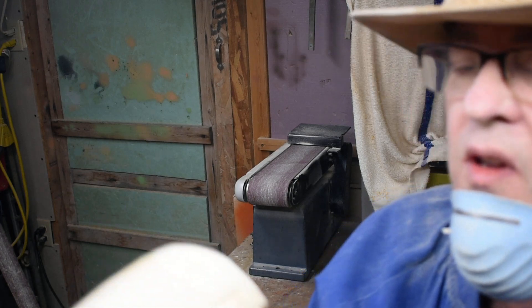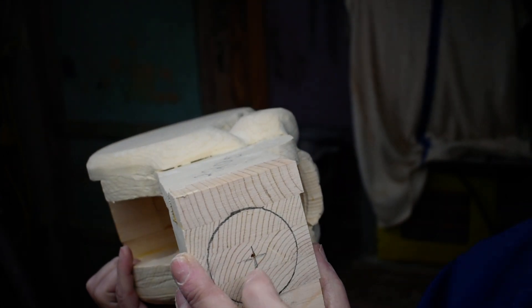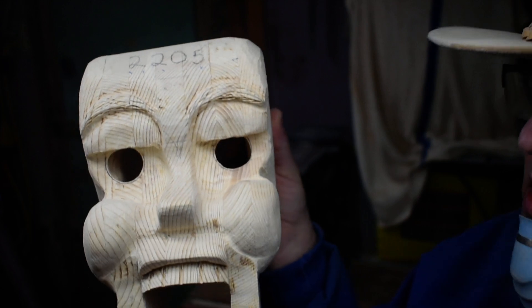Okay, we have our head here, and we got this. We want to round this down, so we got everything marked here, so we're going to use our belt sander to take some of this down.